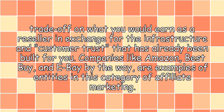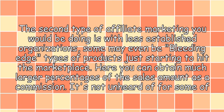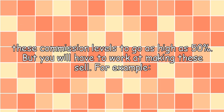Companies like Amazon, Best Buy, and eBay are examples of entities in this category of affiliate marketing. The second type of affiliate marketing you would be doing is with less established organizations. Some may even be bleeding edge types of products just starting to hit the marketplace. Here you can obtain much larger percentages of the sales amount as a commission.